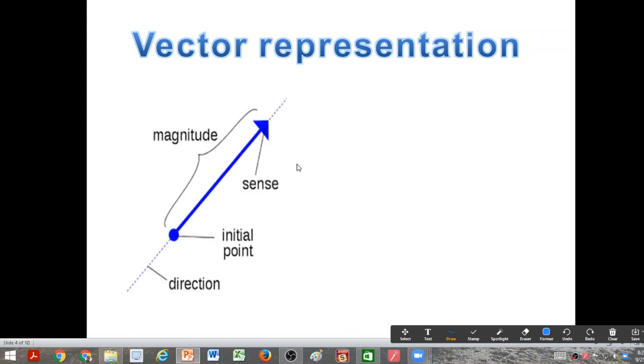As you see here, the vector has a direction, it has a length. So the length of the vector represents the magnitude of the vector, and the arrow on top of it represents the direction.